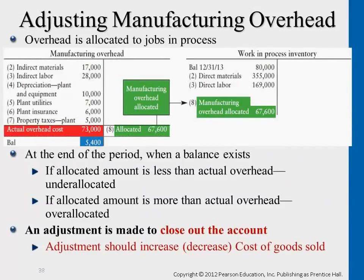So the difference is, we go back to this example again: the actual cost is $73,000, and we were able to predetermine a rate and allocate a portion of indirect costs to each and every job. Add them together, this cost is $67,600 — the portion that we actually assigned to jobs. So the part that we missed, $5,400, is the part that we under-allocated.